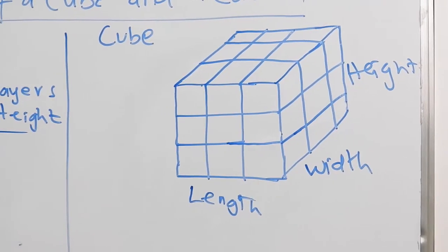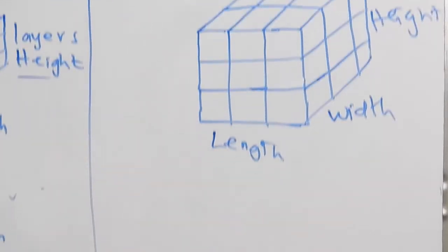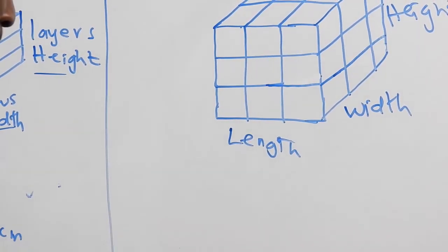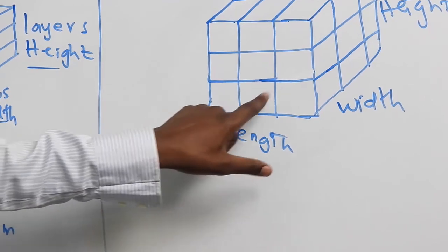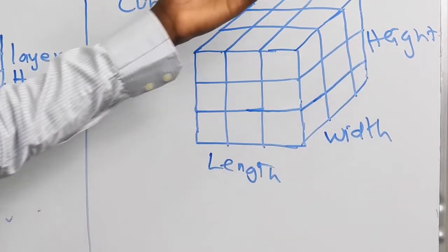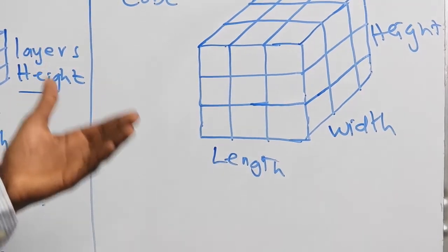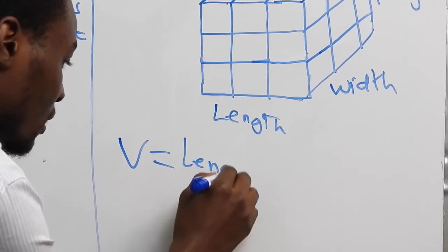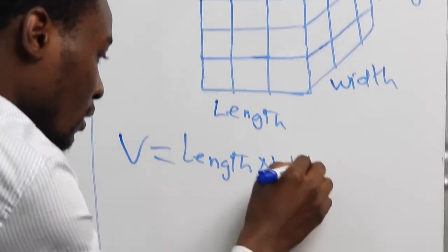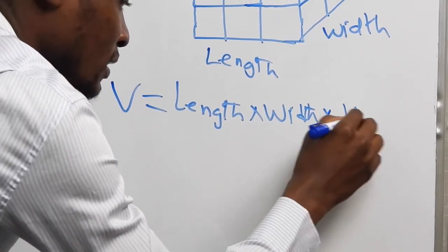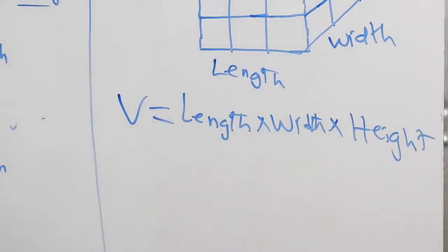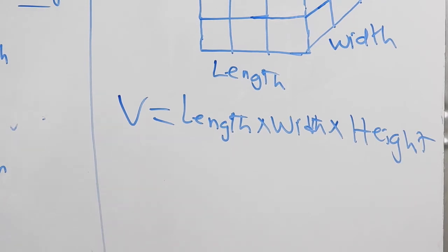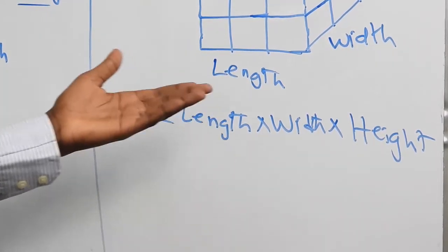The same formula applies for a cube as for a cuboid. Only that for a cube, all the sides are the same, or equal. You can see here we have 3 cubes, 3 cubes, and 3 cubes. So the formula for the volume of a cube is still given by length times width times height, but all sides are equal. Let us look at an example of finding the volume of a cube.